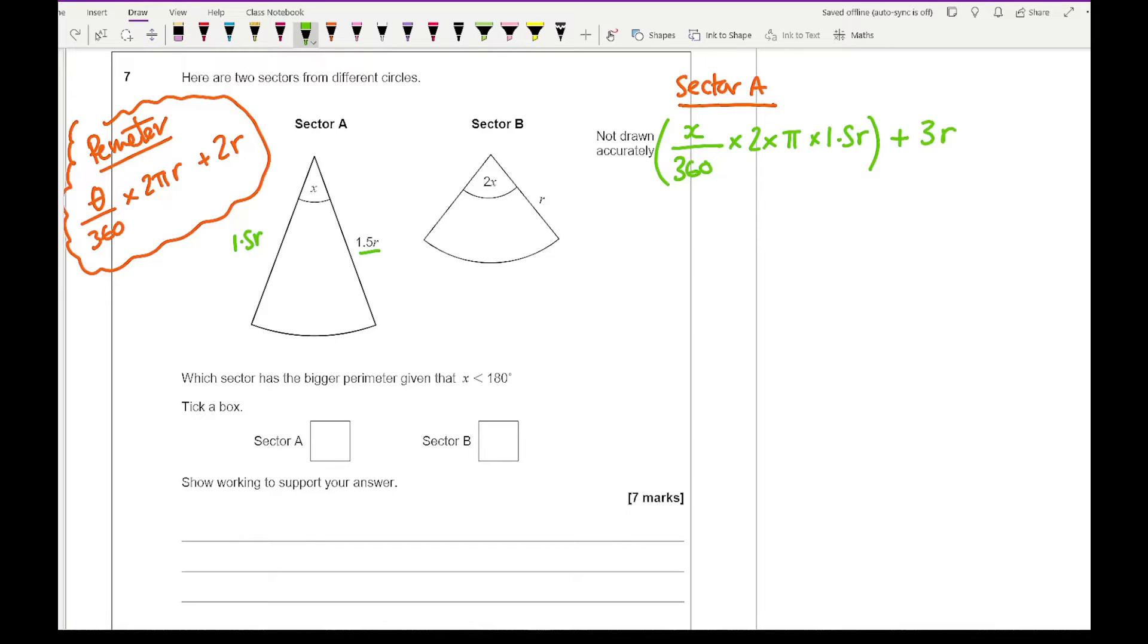Neatening all of this up, 2 times 1.5 is 3, so that's going to be 3 pi r x divided by 360 plus 3r. I could neaten it up more. Let's simplify it now. We've got pi r x over 120 plus 3r. I'm just going to put a little box around that.